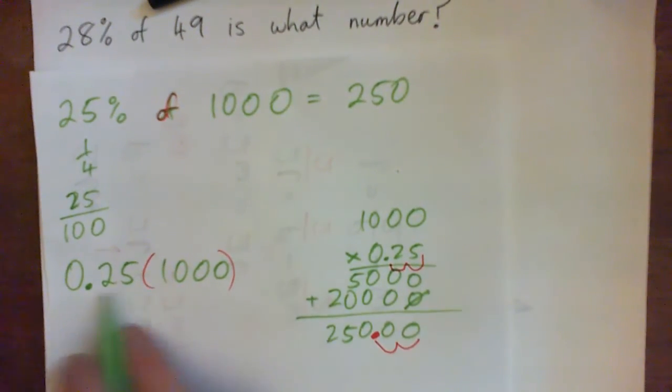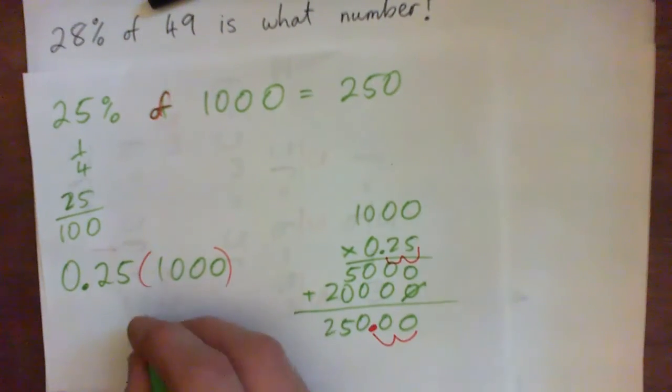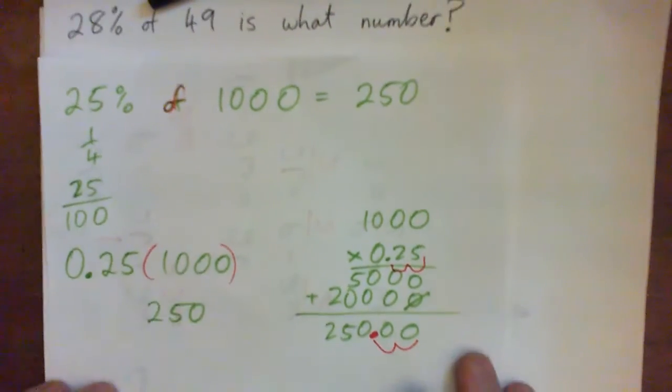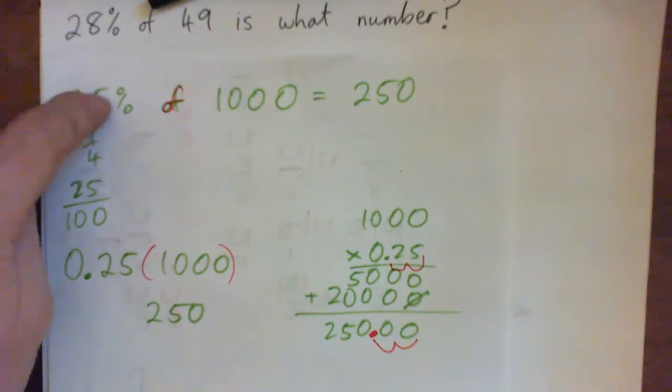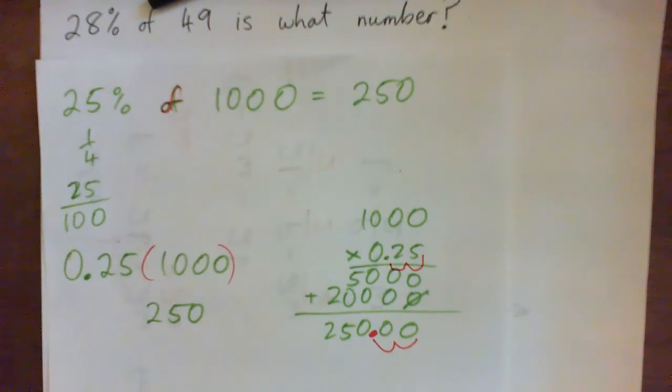So anyway, it shouldn't come as a surprise, if you multiply this by this, you're going to get 250. Does that make sense? All right. So that's basically the setup. You turn the percent to a decimal, and then you multiply by that, and that's how you get a percent of something. Does that make sense?